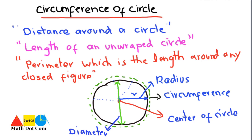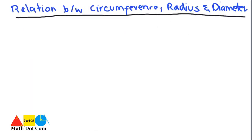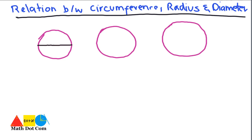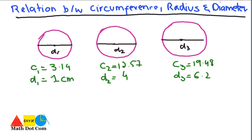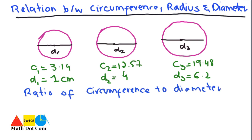Let's see the relationship between circumference, radius, and diameter — this is a very important concept so you can easily solve problems involving these values. To find the relation, we take three circles. We draw the diameter of each circle, labeling them d1, d2, and d3. With the circumference values given, we calculate the ratio of circumference to diameter — C over D — for each circle.